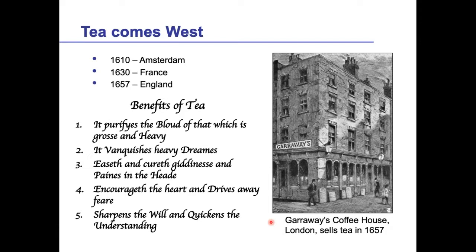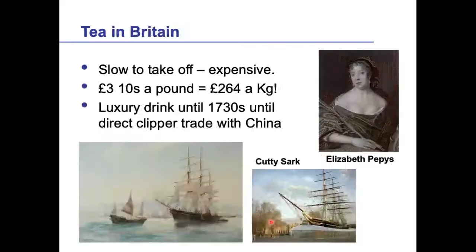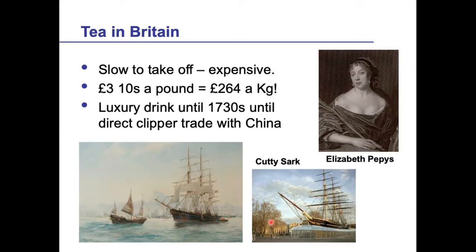At this point tea wasn't served with milk — it was served warm and from barrels, very much like beer was served at that time. It was also very expensive to start with, which meant it was slow to take off, and only the rich and upper classes could afford it. In 1657, three pounds and ten shillings a pound in weight is equivalent to £264 a kilo in today's money.